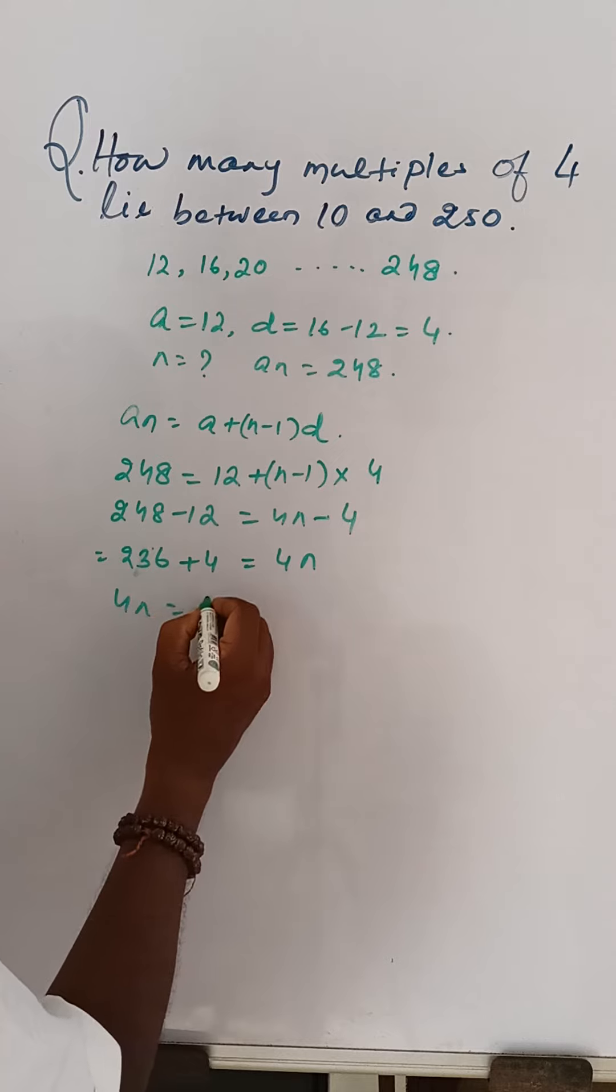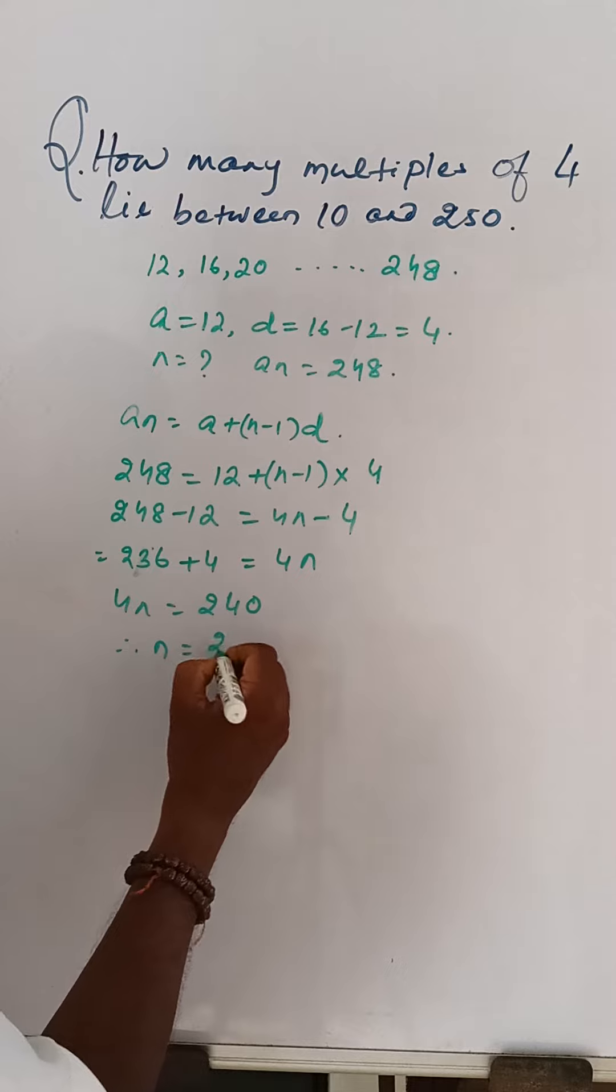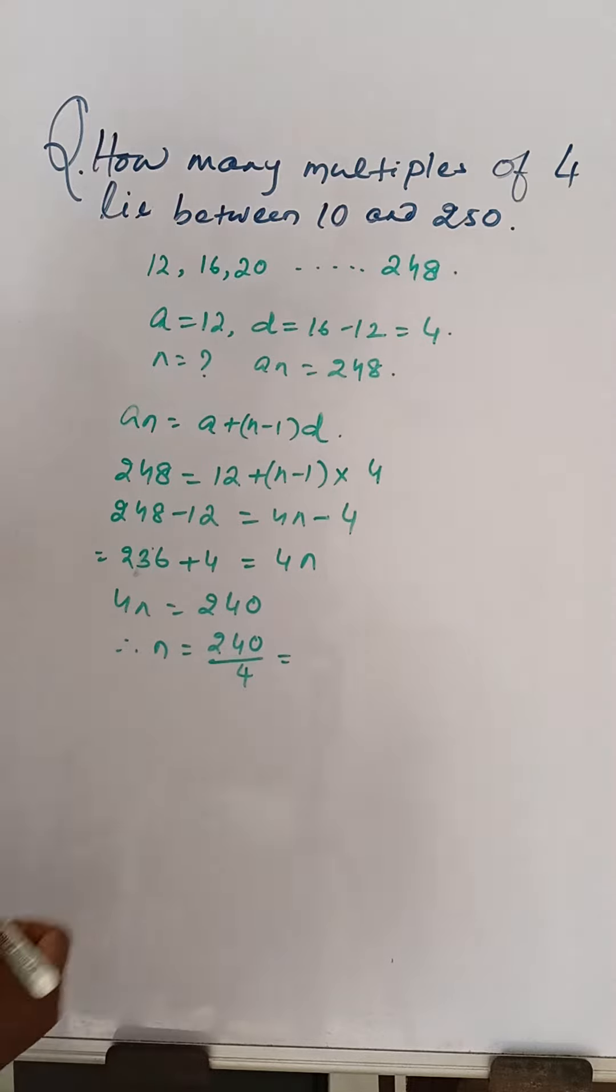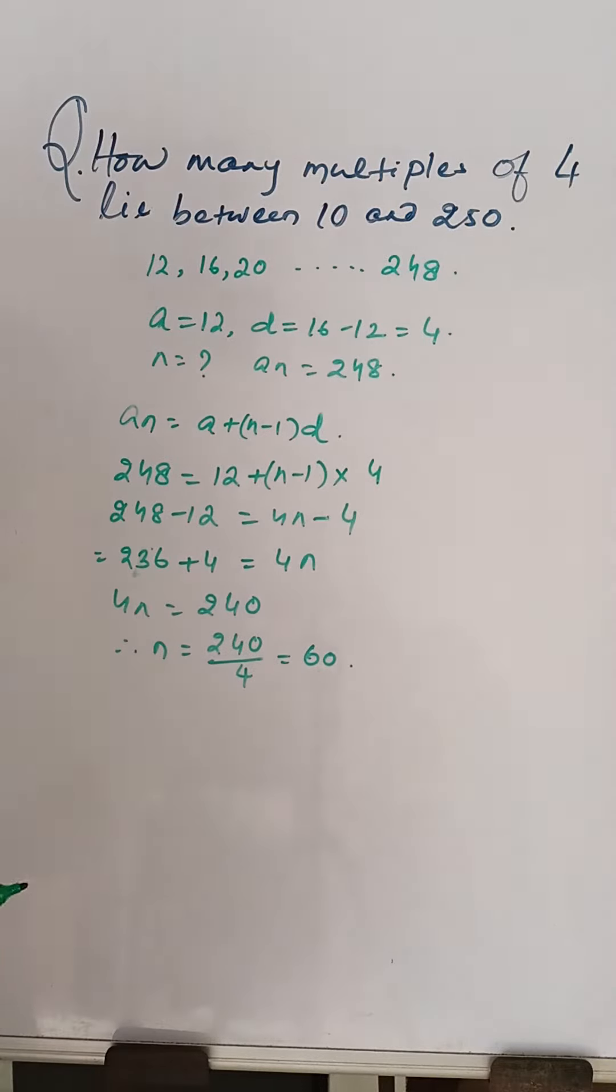4N is equal to 240. Therefore, N is equal to 240 by 4, 60, the answer.